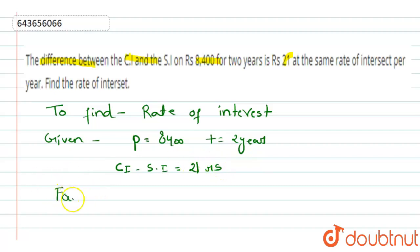Now the formula that we need to use in this question is: CI minus SI equals to P times (R/100) to the power of t, where t is the time, r is the rate of interest, p is the principle.